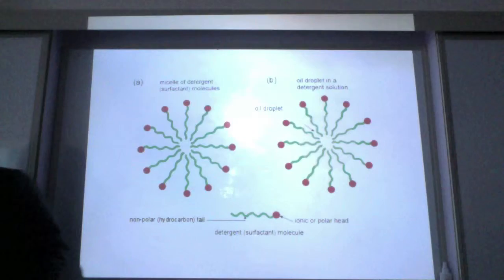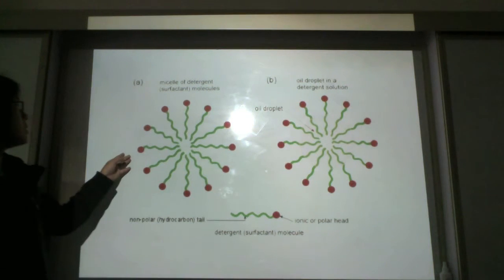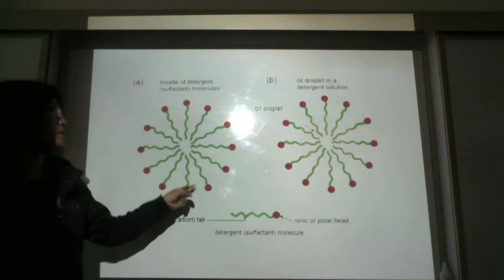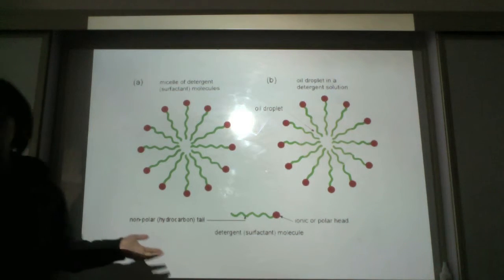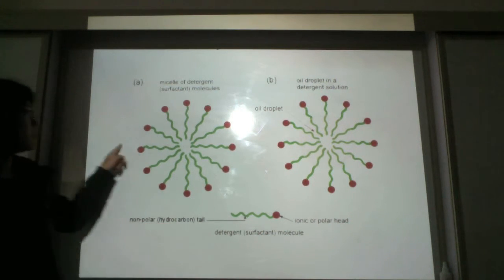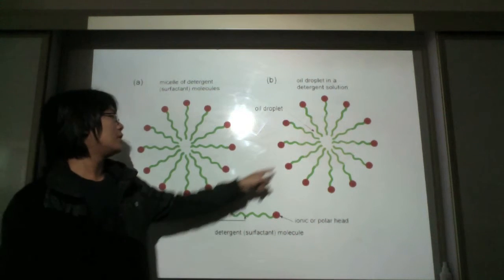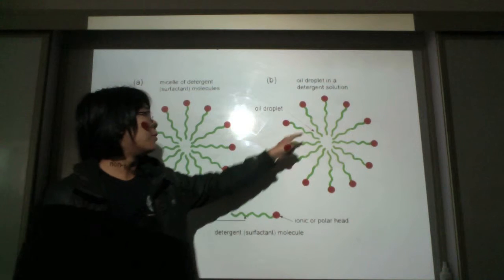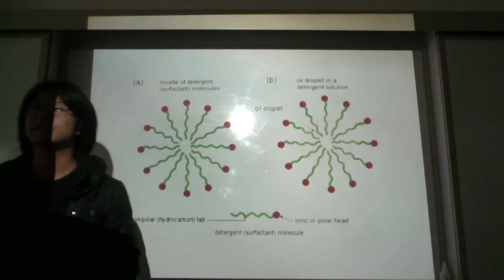This is just another diagram showing a micelle. So basically, if there's no oil, surfactants will arrange themselves into this. However, if there is oil, there will be an oil or nonpolar liquid within it, actually segregating. This is just how that would work.